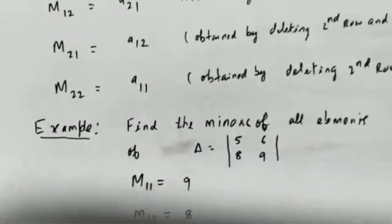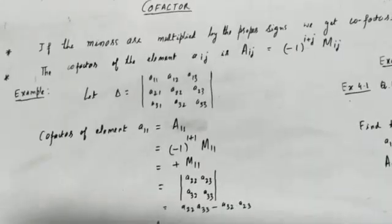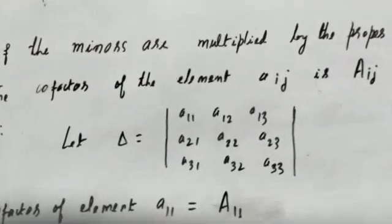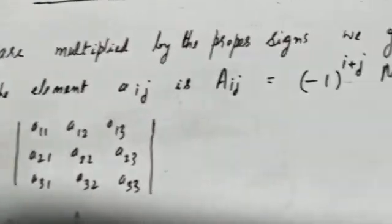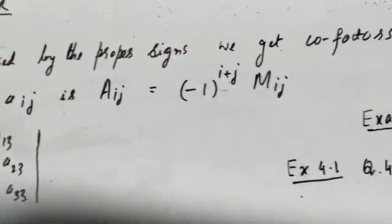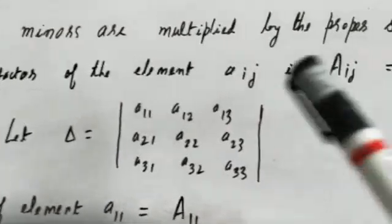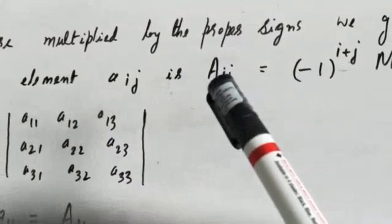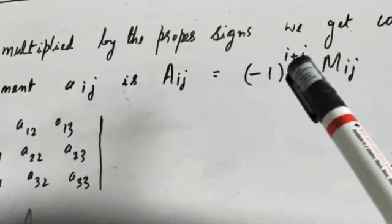This is how you find minors of a determinant of order 2. Now we learn how to find the cofactor. If the minors are multiplied by a proper sign we get the cofactor. The cofactor of element aᵢⱼ is denoted by capital Aᵢⱼ, where i is the row and j is the column. The formula is: Aᵢⱼ = (−1)^(i+j) × Mᵢⱼ.